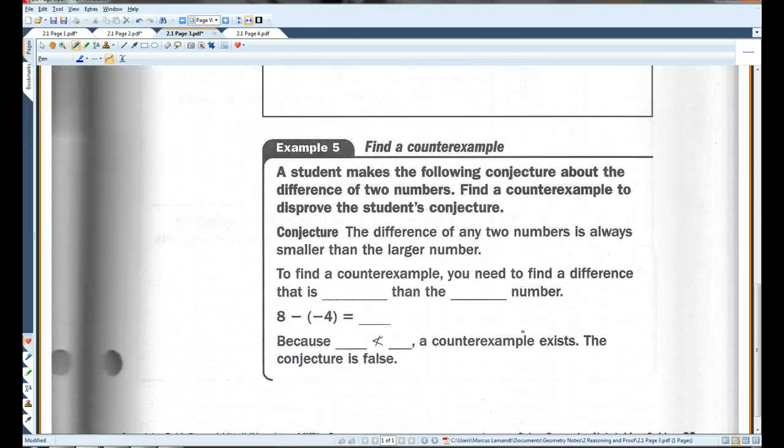I'll let you guys do that checkpoint. Example five. A student makes the following conjecture about the difference of two numbers. Find a counterexample to disprove the student's conjecture. The difference of any two numbers is always smaller than the larger number. So basically, if you take two numbers, like eight minus five, whatever you get is going to be smaller than the bigger number. We need to find a counterexample. We need to prove this wrong. Basically, we need to find a difference that is greater than the larger number.